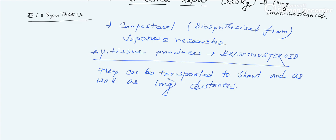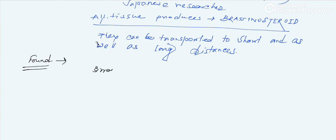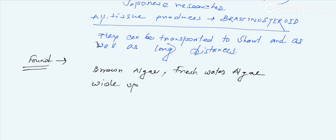It is a major hormone that plays an important role. If we look at which kinds of plants it is found in, we can say monocots, freshwater algae, brown algae — such ancient plant groups. This indicates that brassinosteroid is a widespread, ancient hormone and a widespread plant hormone.